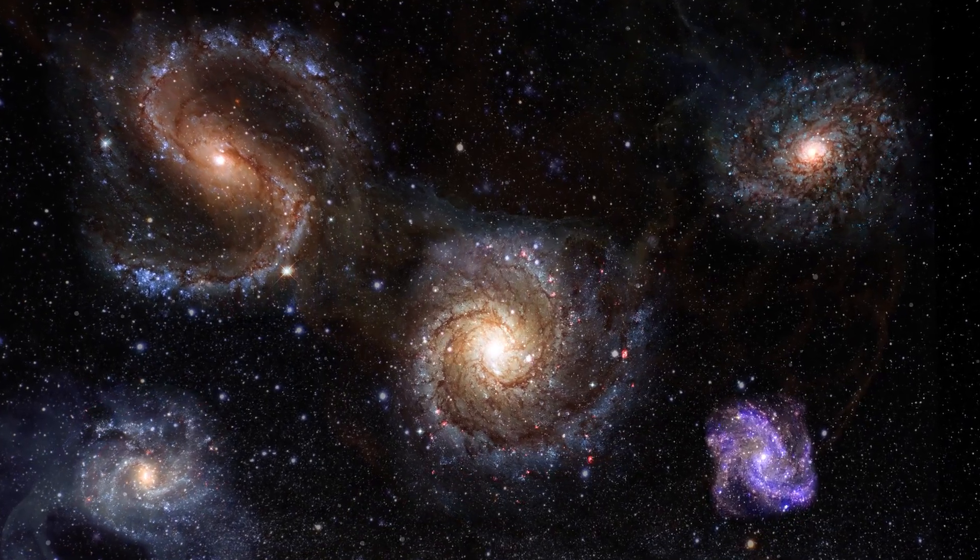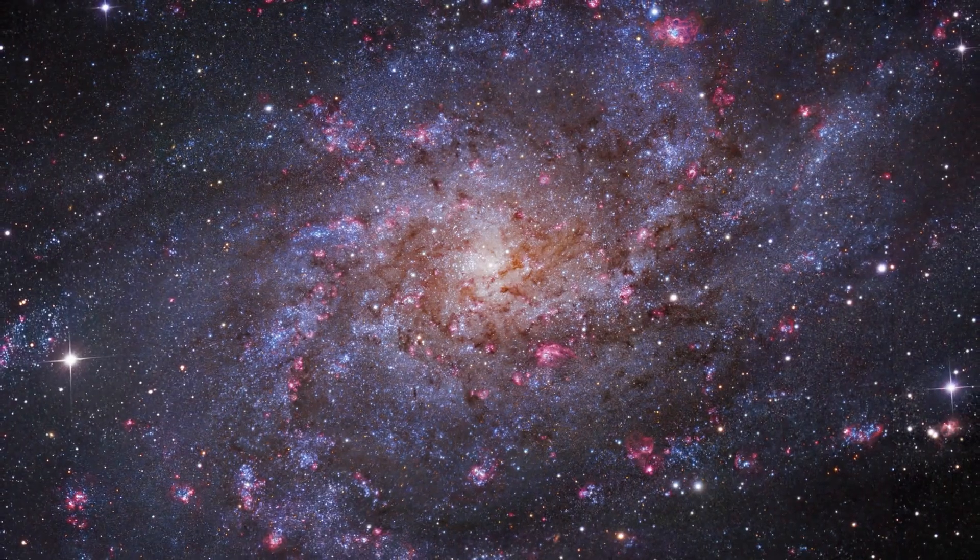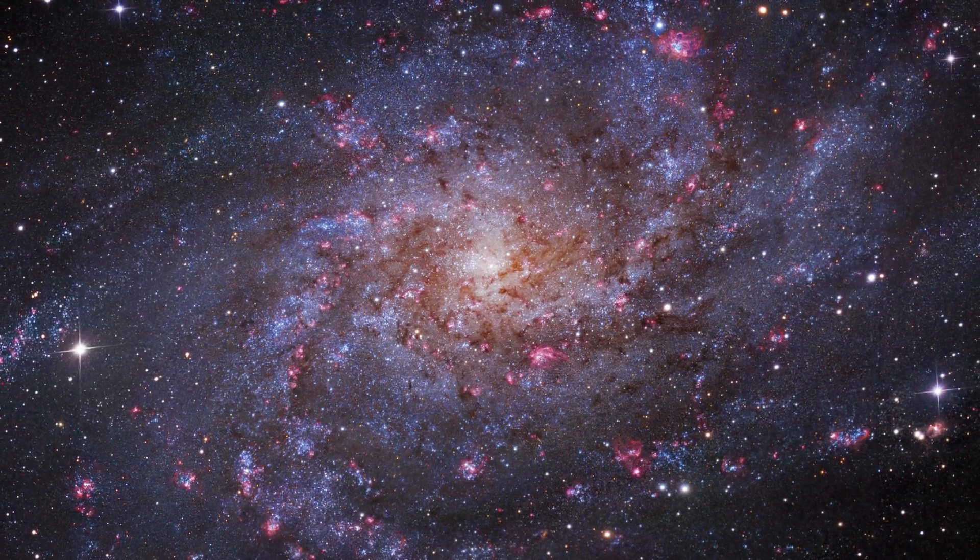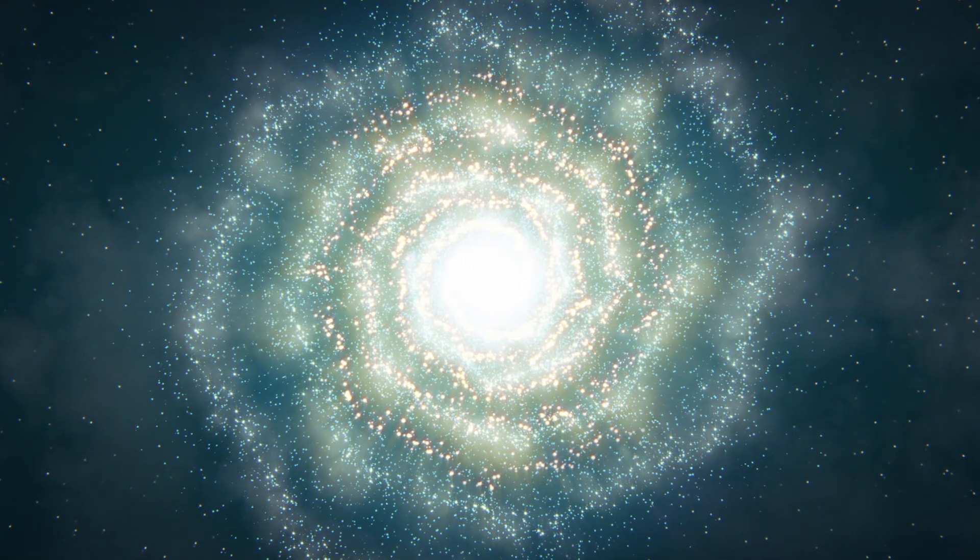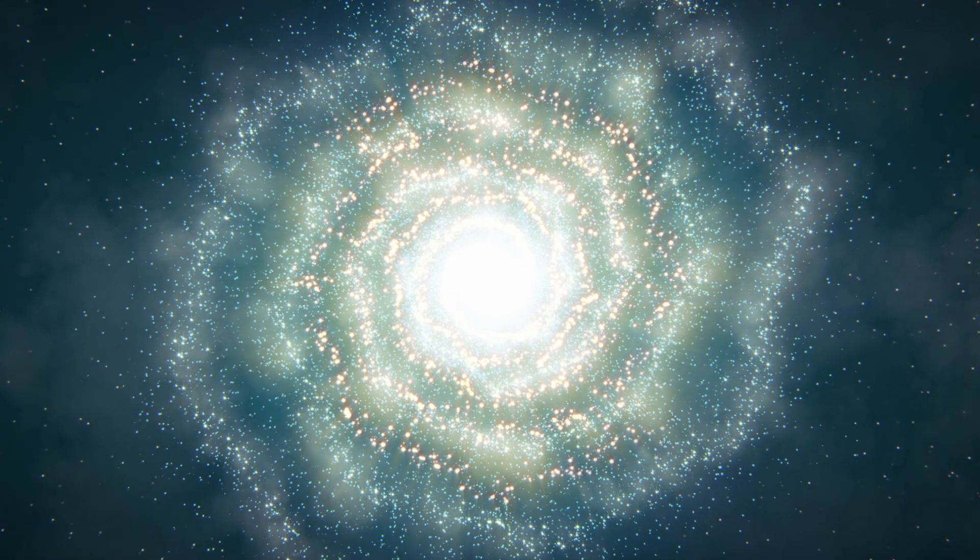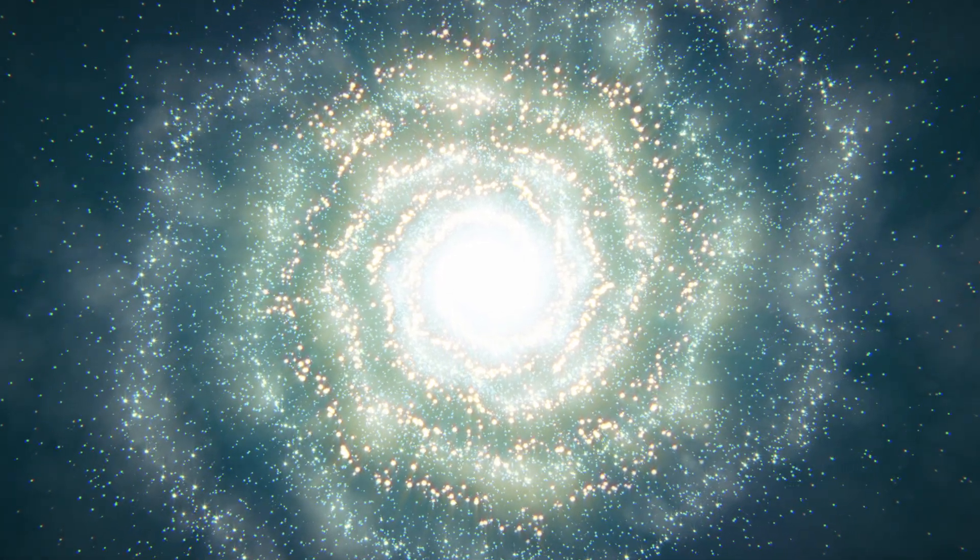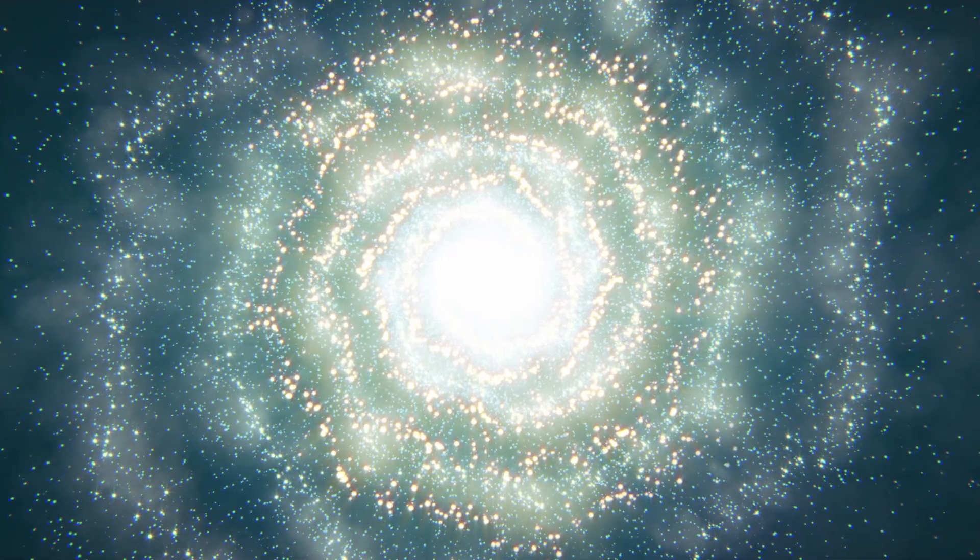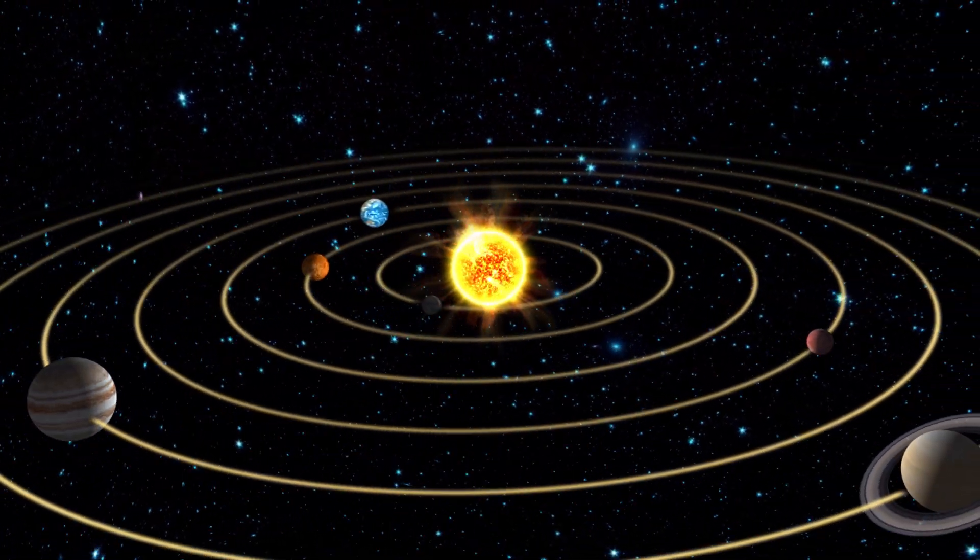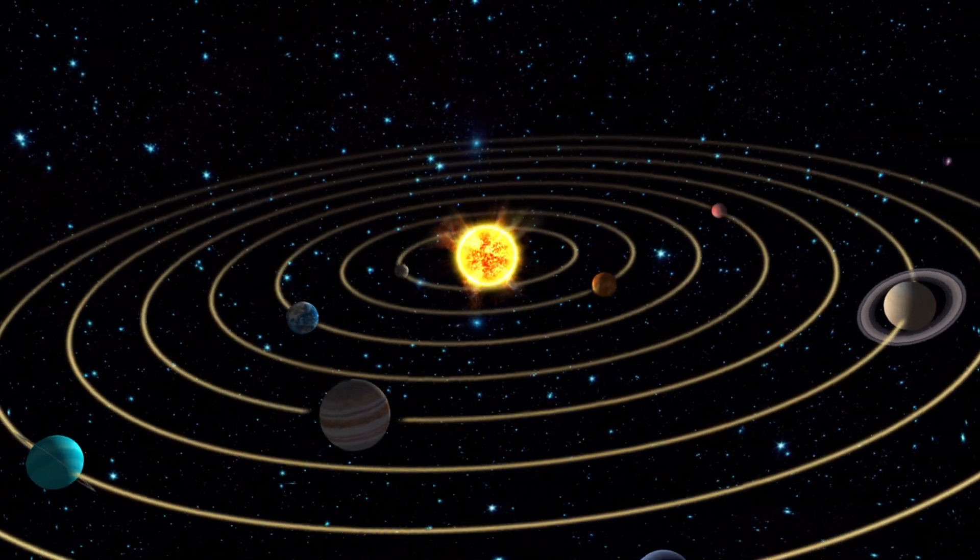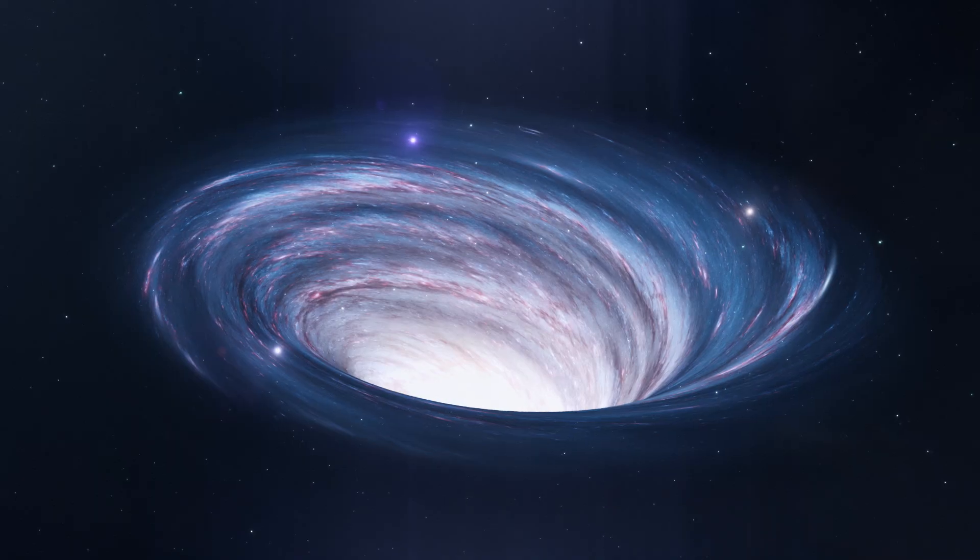Galaxies are mesmerizing structures, often likened to grand cosmic whirlpools, teeming with billions of stars, gas and dust. They dance to the rhythm of the universal forces at play. One would expect that the stars on the outskirts of a galaxy would orbit the galactic center more slowly than those closer in, much like the planets in our solar system. The inner planets like Mercury and Venus orbit the sun faster than the outer ones, such as Neptune. This expected behavior is rooted in the laws of classical mechanics.